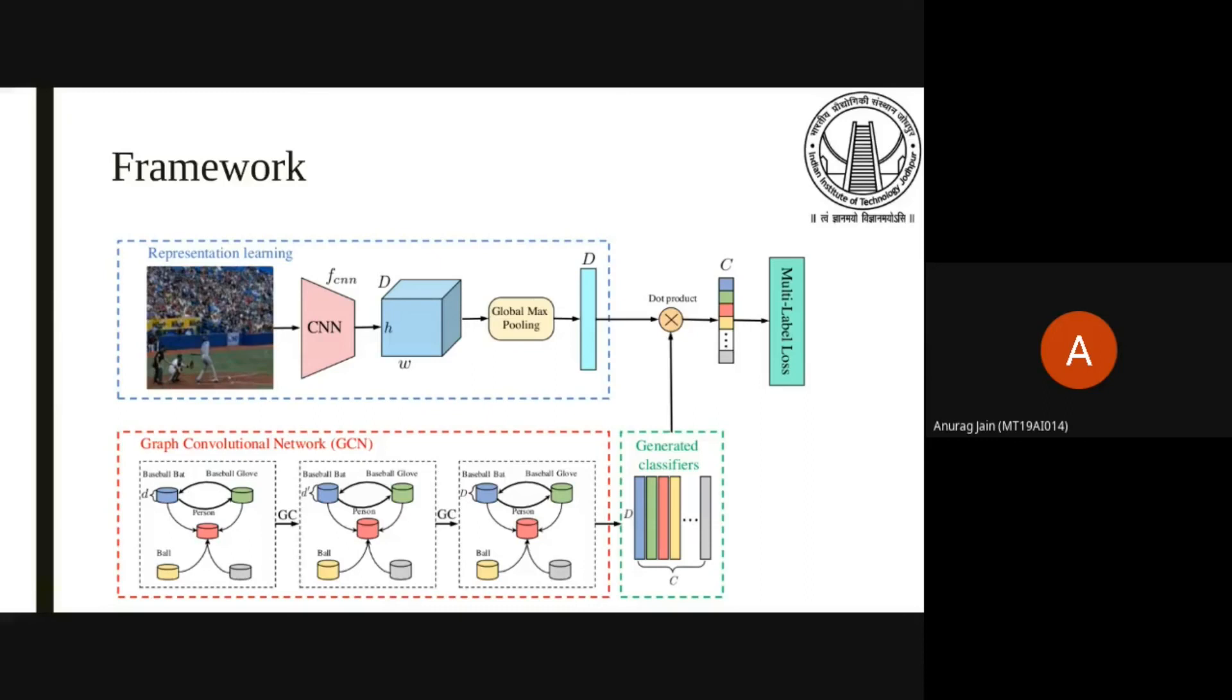For the GCN based classifier learning, we learn interdependent object classifiers from label representations using a two-layer GCN. The initial label embedding used is a 300-dimensional GloVe word embedding trained on Wikipedia dataset. So we start from the Wikipedia word embedding, then we train a two-layer GCN and finally we get the generated classifiers. We take the dot product of the image feature representation and the label classifier to identify the presence of labels in the image.